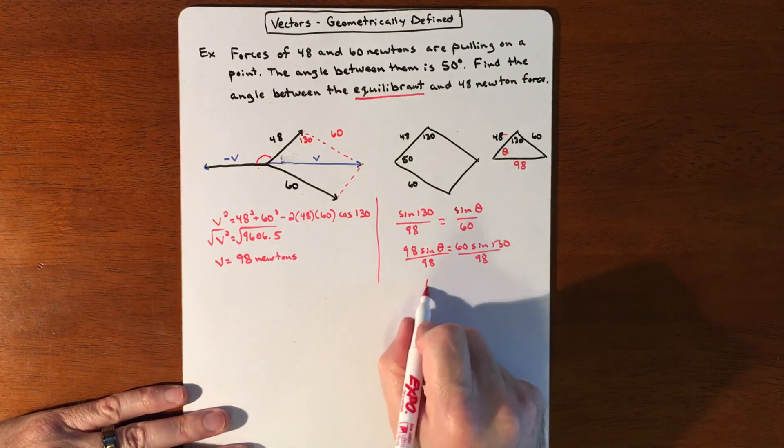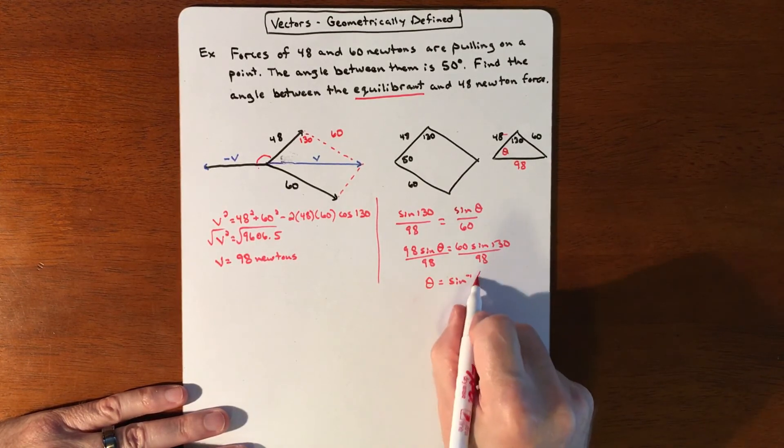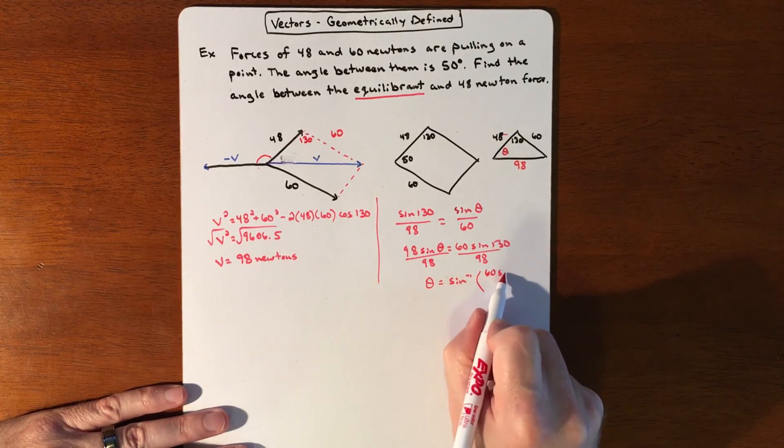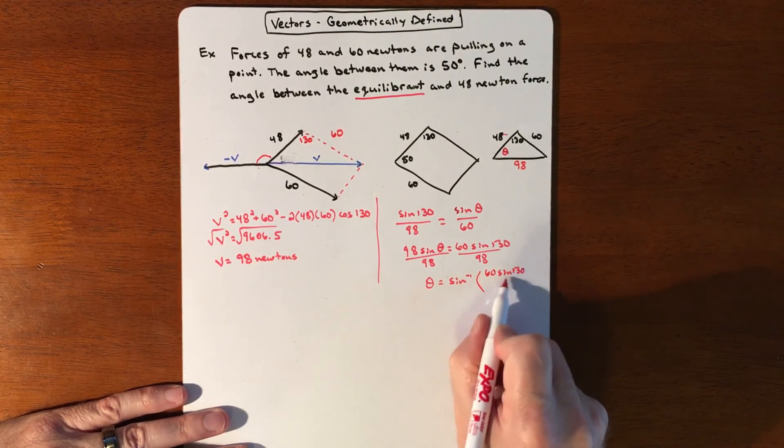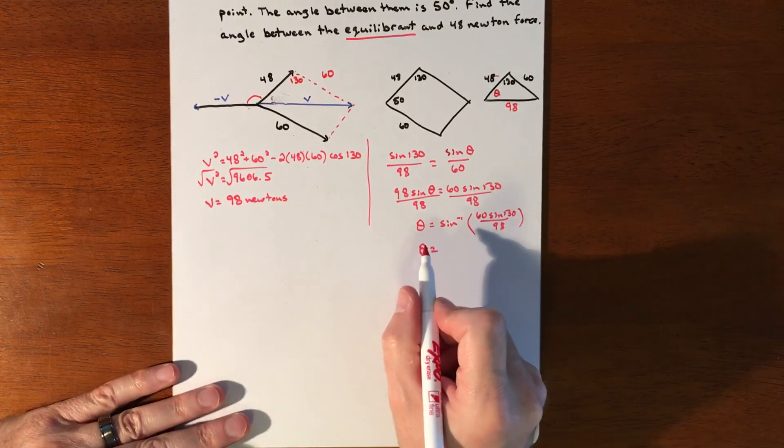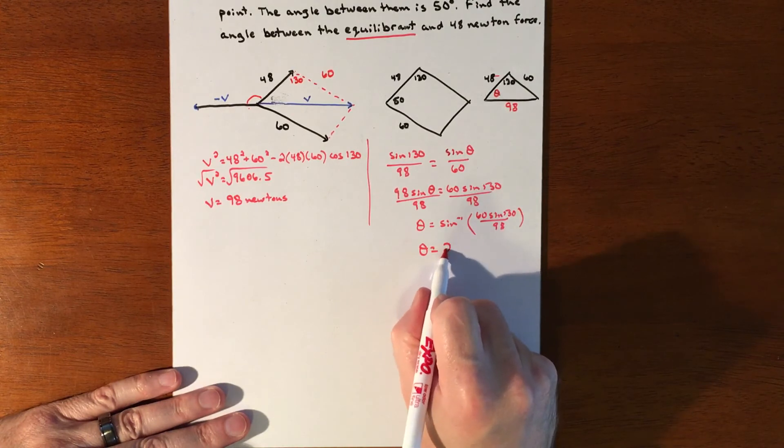And then whatever this value is, we're going to have to do the inverse sine of it. So theta is going to be the inverse sine of whatever this turns out to be. So theta plug that in the calculator, make sure we're in degrees, we get that to be about 28 degrees.